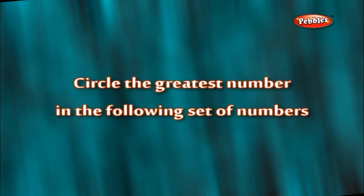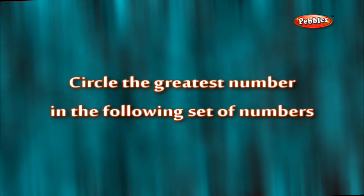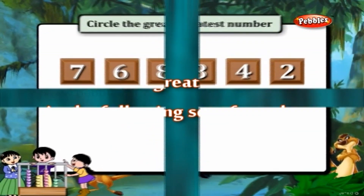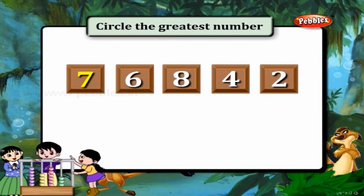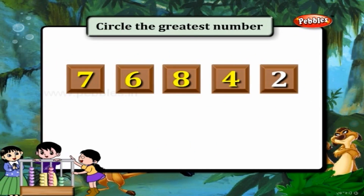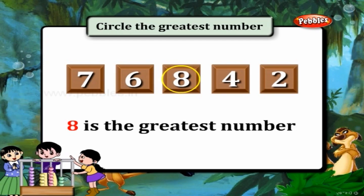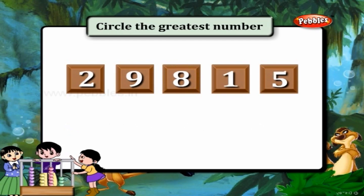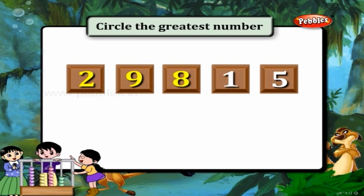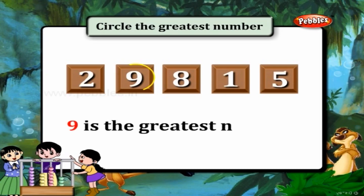Circle the greatest number in the following set of numbers. 7, 6, 8, 4, and 2. Now which is the greatest number? 8 is the greatest number. Next set: 2, 9, 8, 1, and 5. 9 is the greatest number.